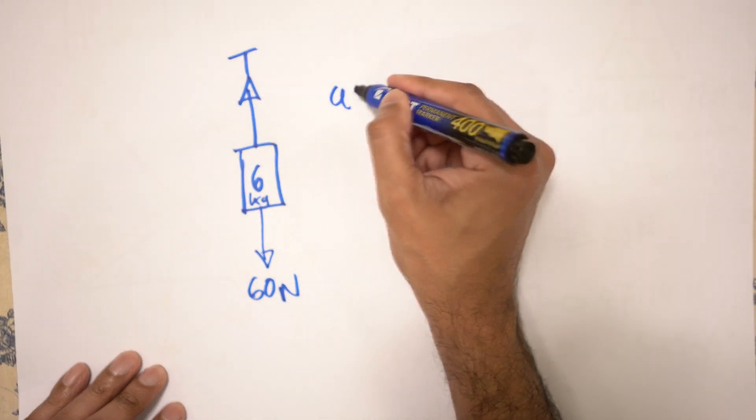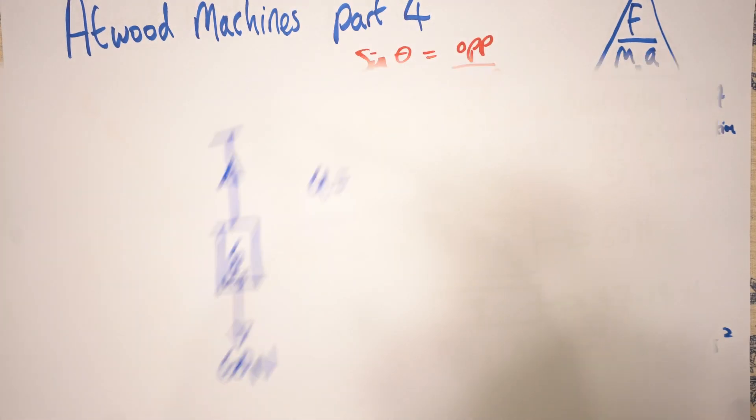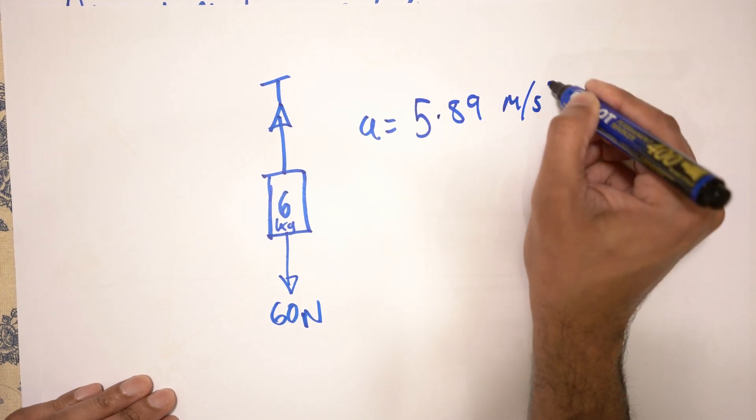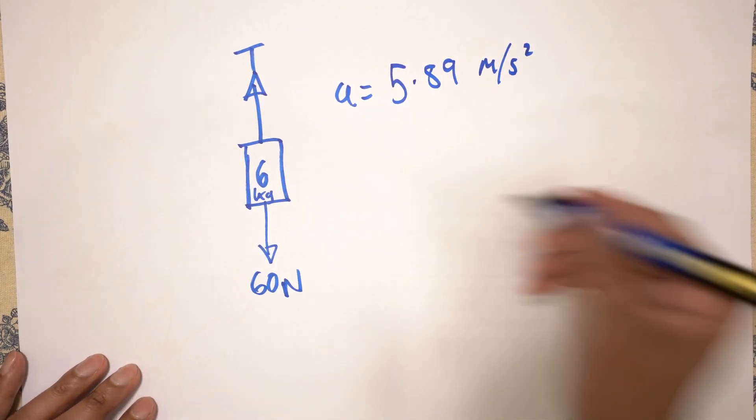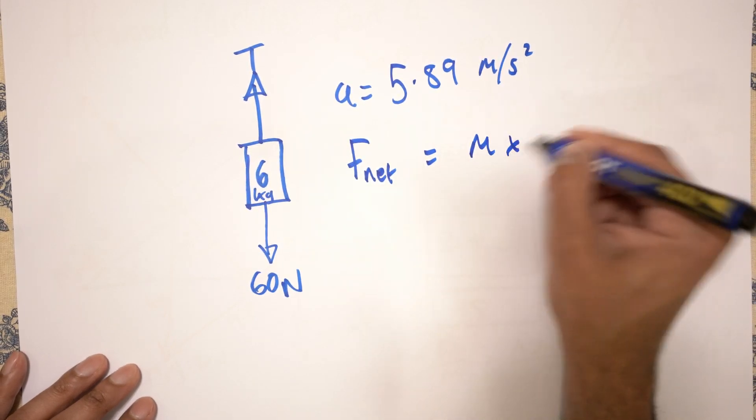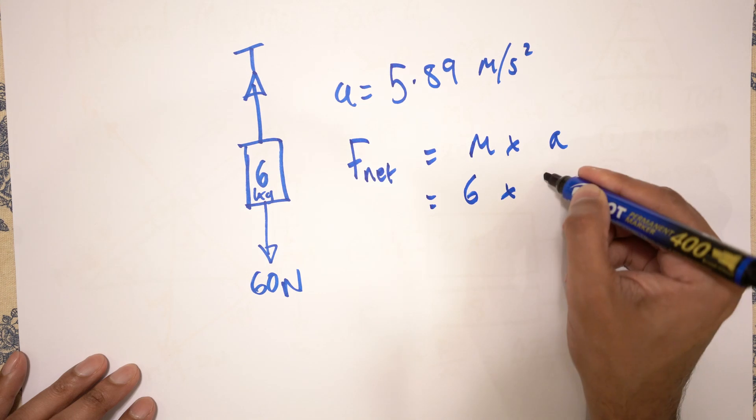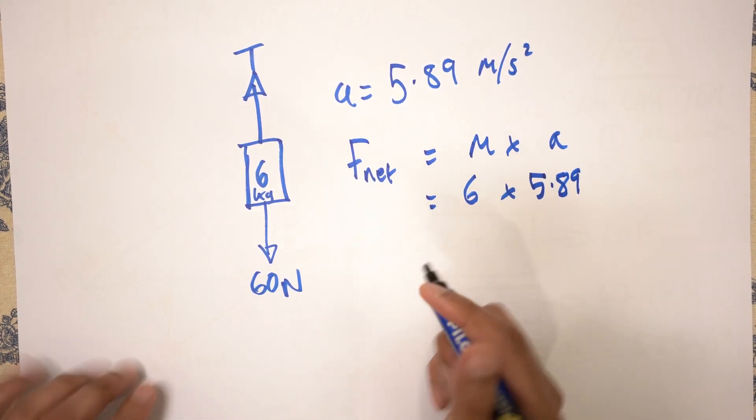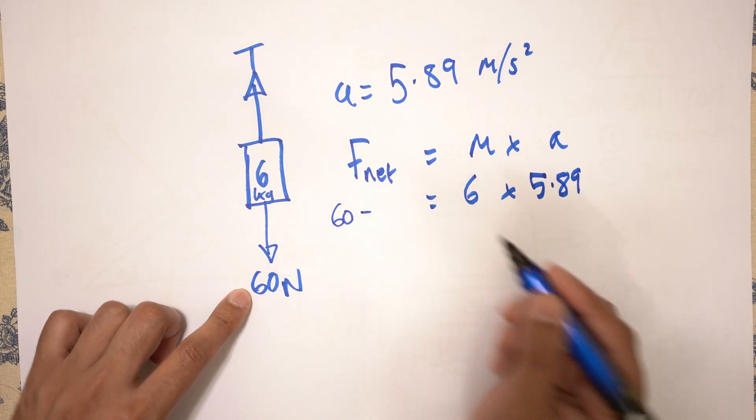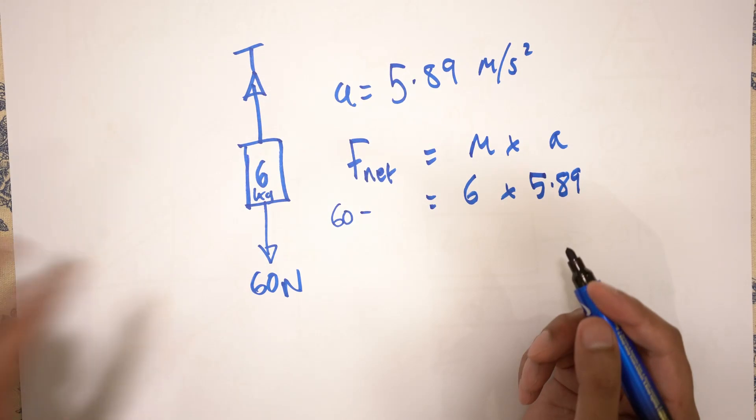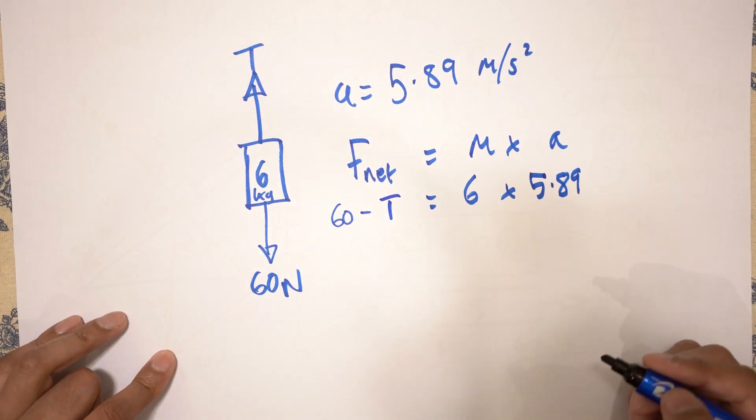And we know that the acceleration is 5.89 meters per second squared. And our equation is F net is equal to mass times acceleration. Mass is 6. Acceleration is 5.89. And your F net is going to be 60 minus the tension, because it's bigger than the tension because it's accelerating downwards.